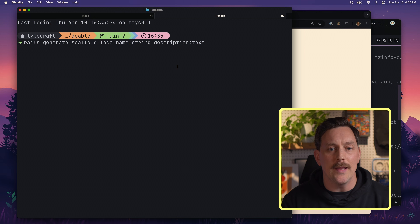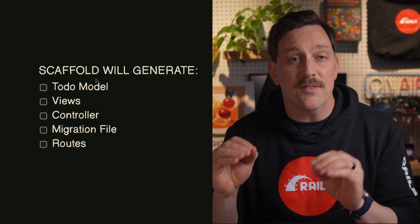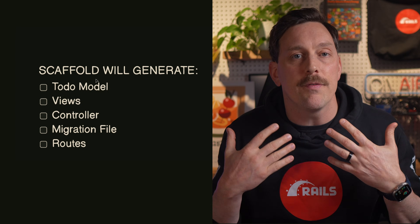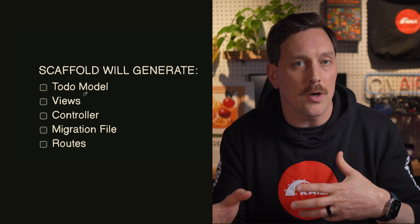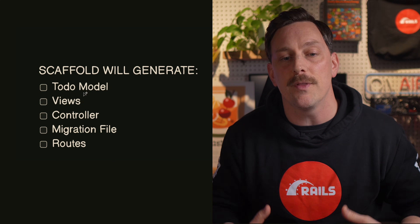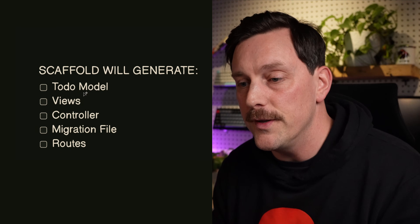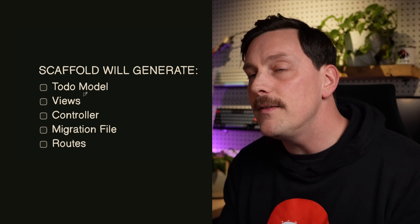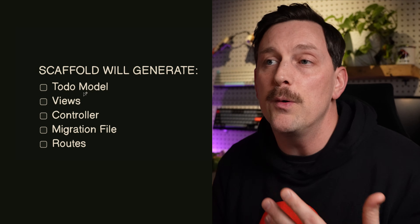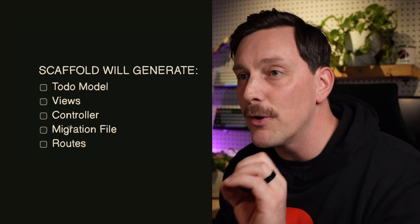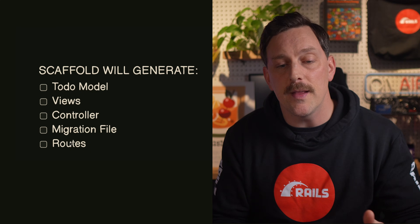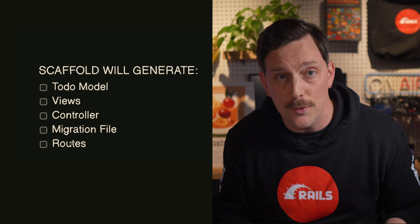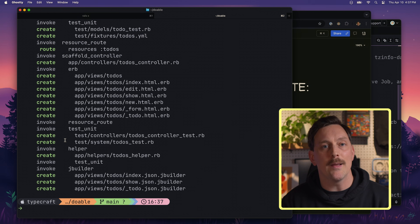What exactly does this scaffold command do? Looking at a diagram: Rails is going to generate a to-do model — the class that structures how we access our database for the to-do object. It will also generate views and a controller, giving us the full MVC structure. On top of that it generates a migration file, and it edits our routes configuration so we have a way to handle requests for these to-dos.